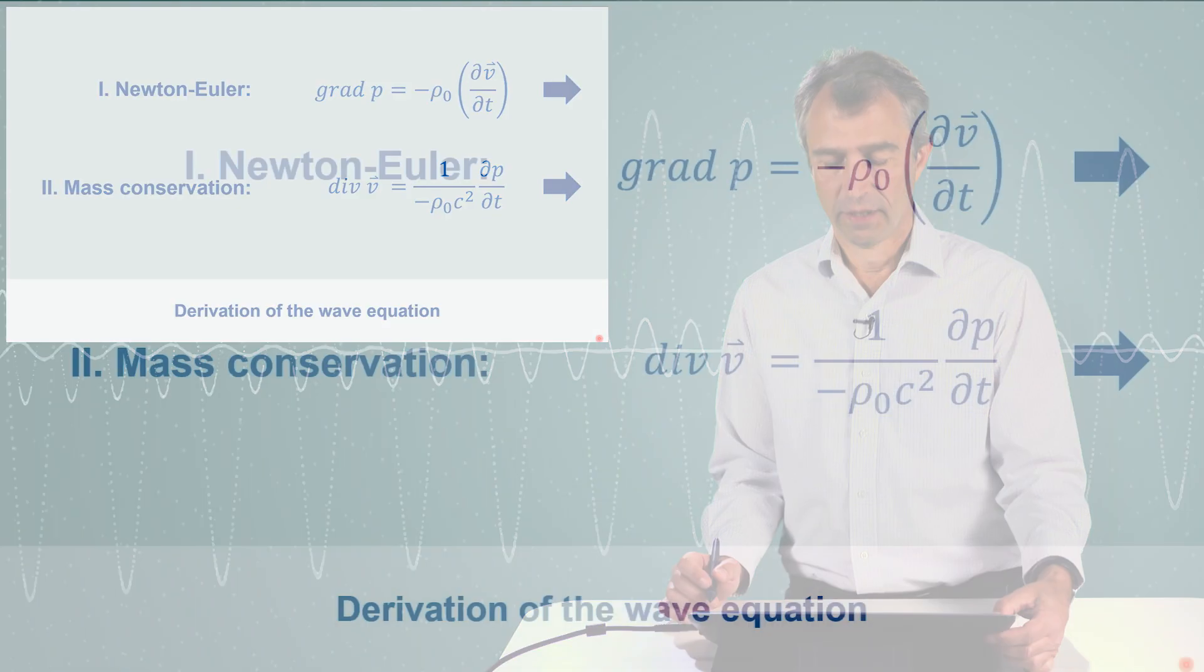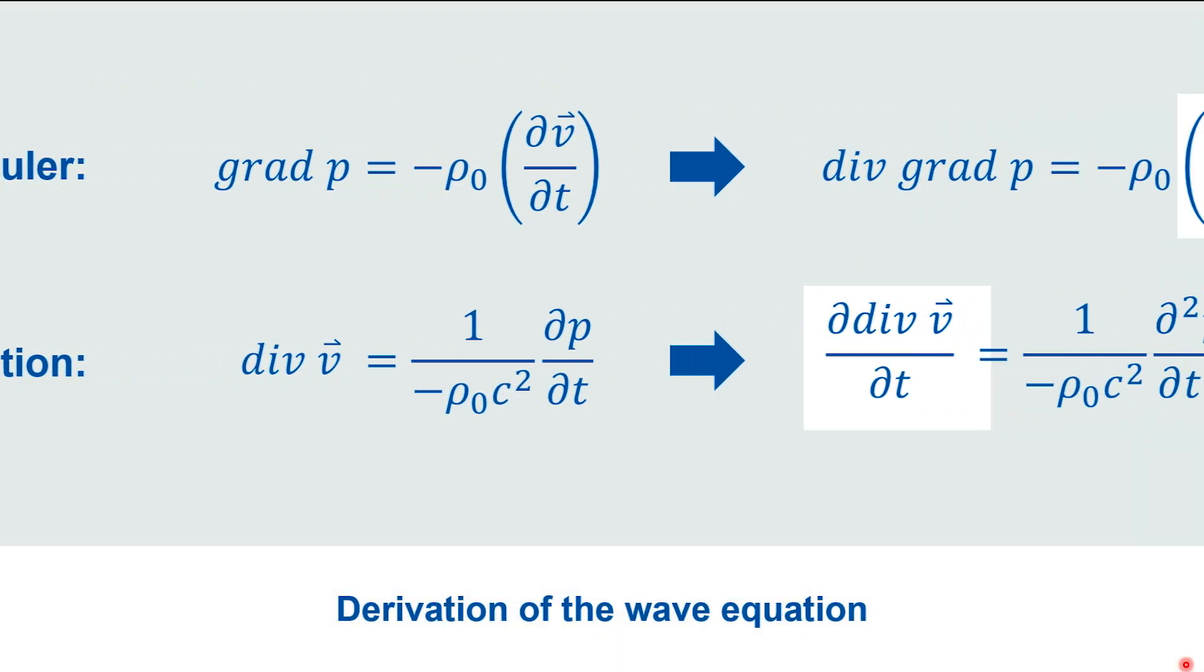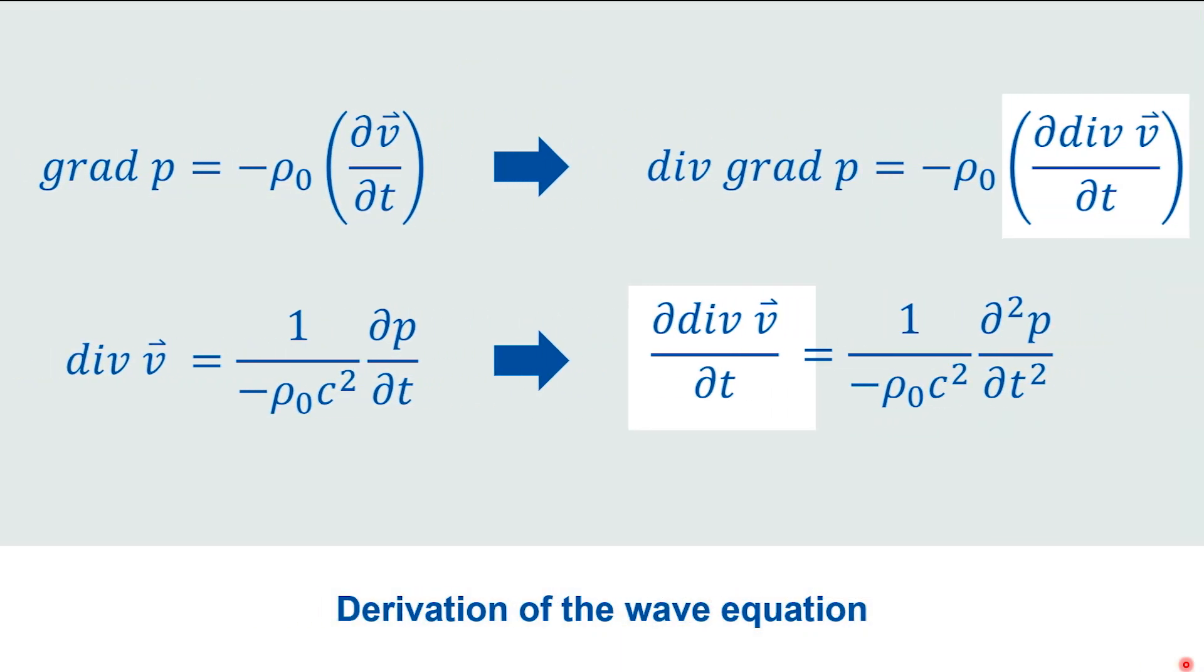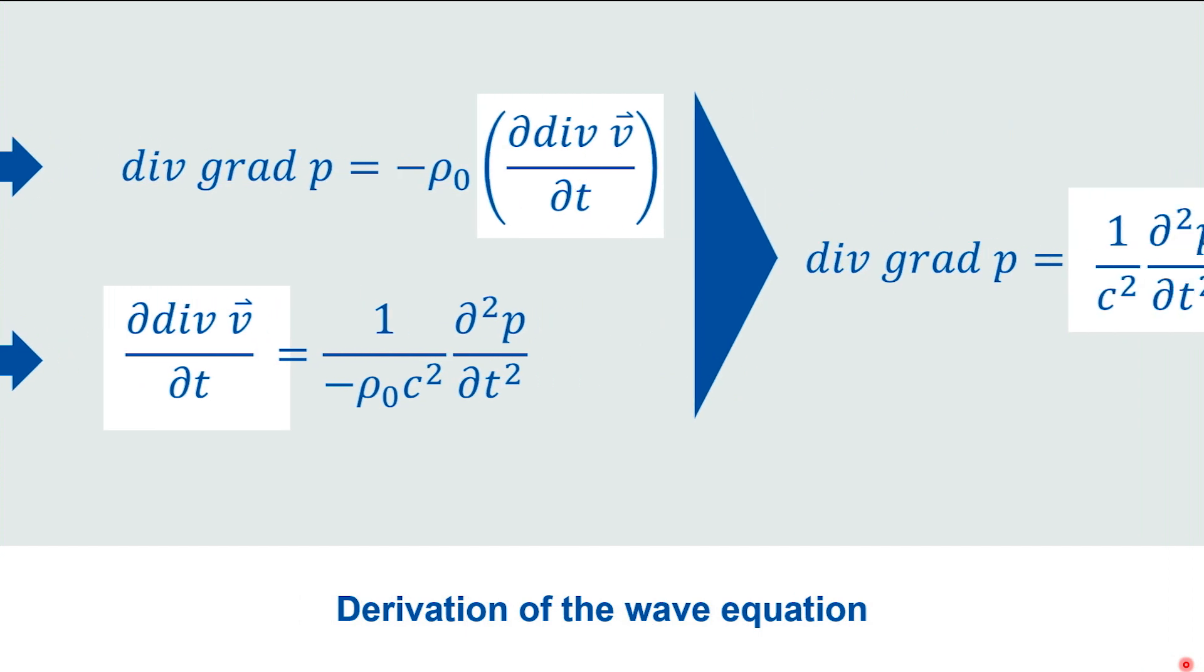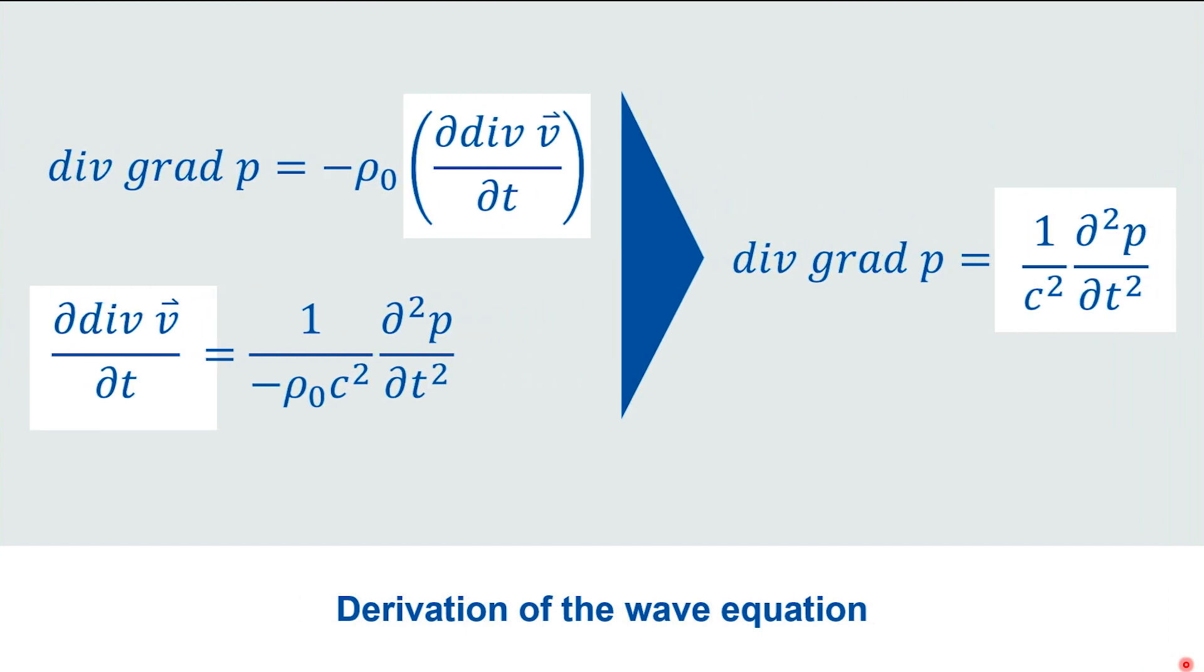Here we see our two equations again and the next task will be to apply an insertion rule by processing those equations. The first one is processed by a space derivative. The second one is processed by a time derivative and this way we see that the term including the particle velocity is identical. We can now insert this term and the rest is just the second derivative to space of the pressure and the right side is just the second derivative of pressure to the time with the constant.